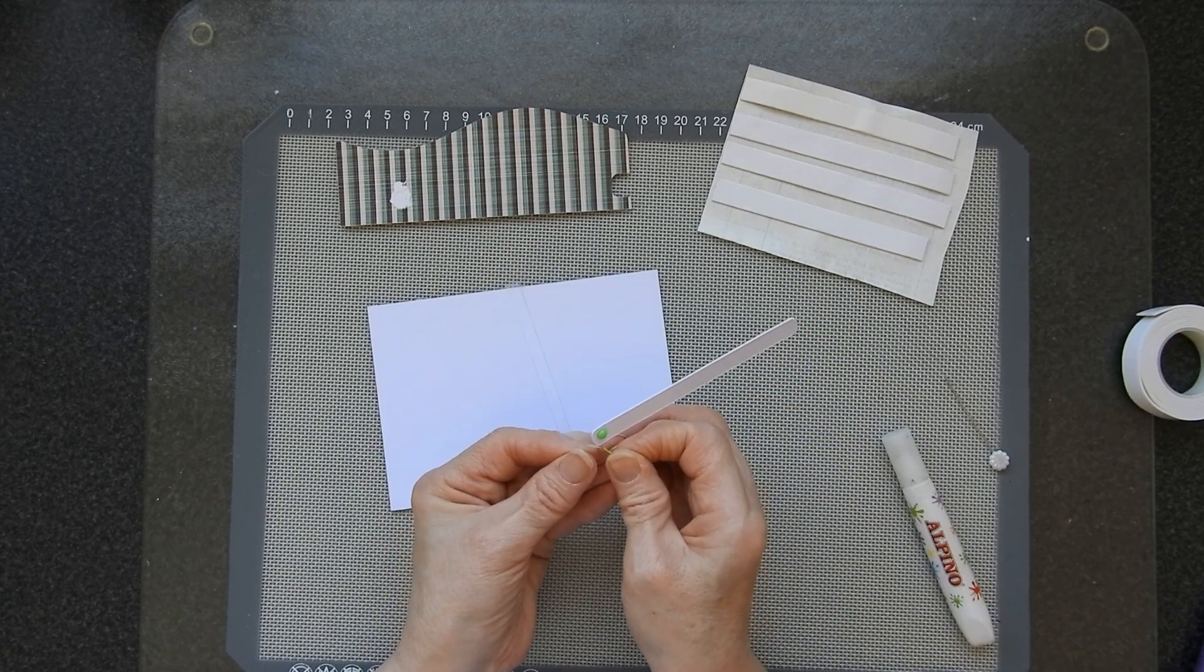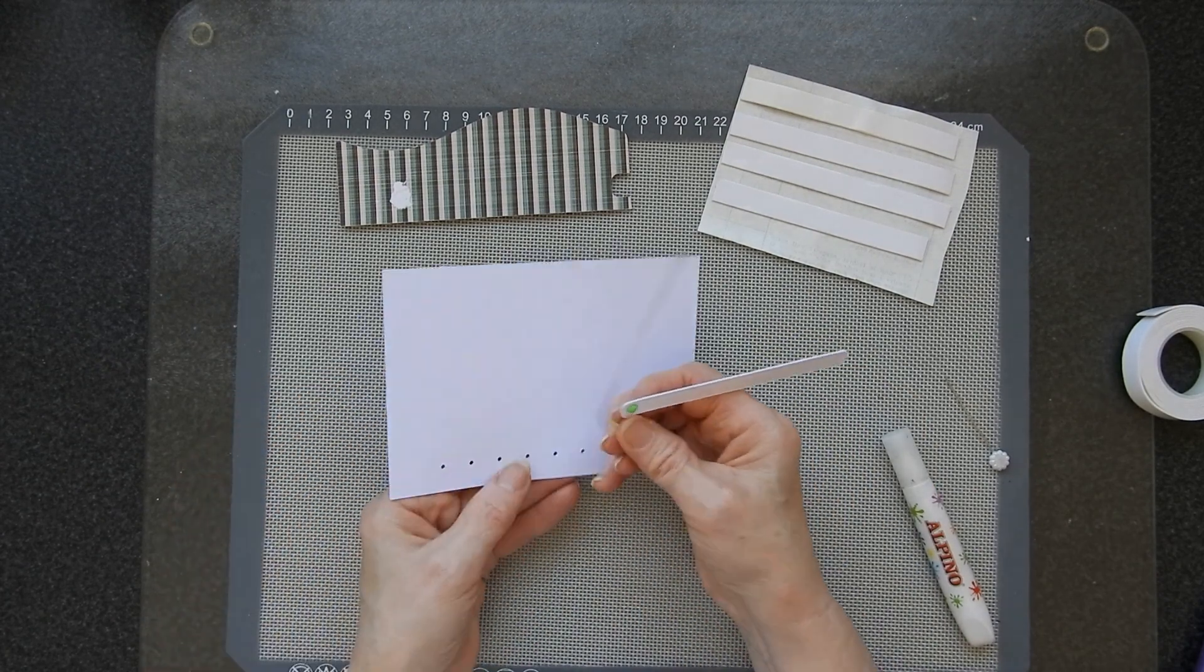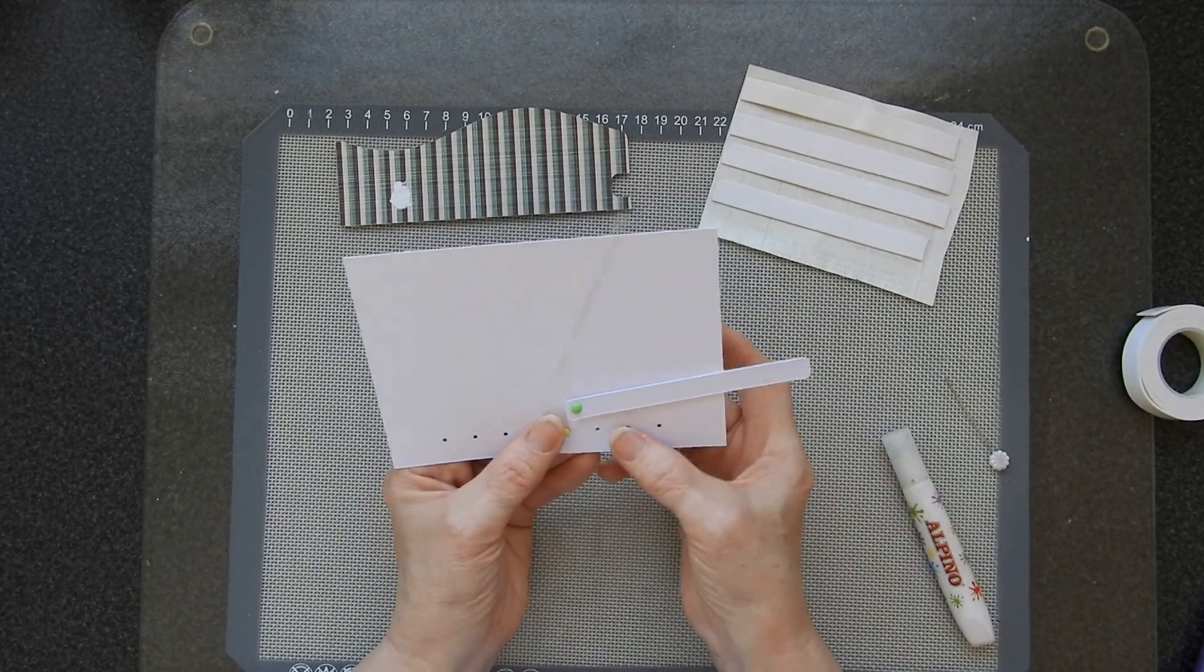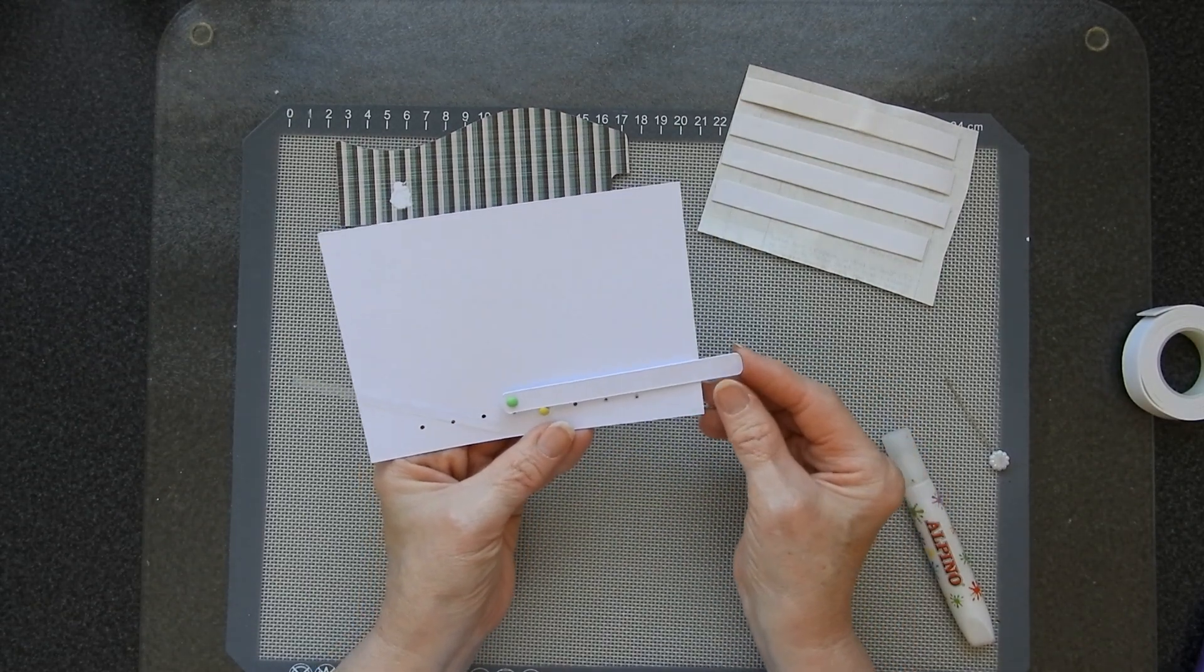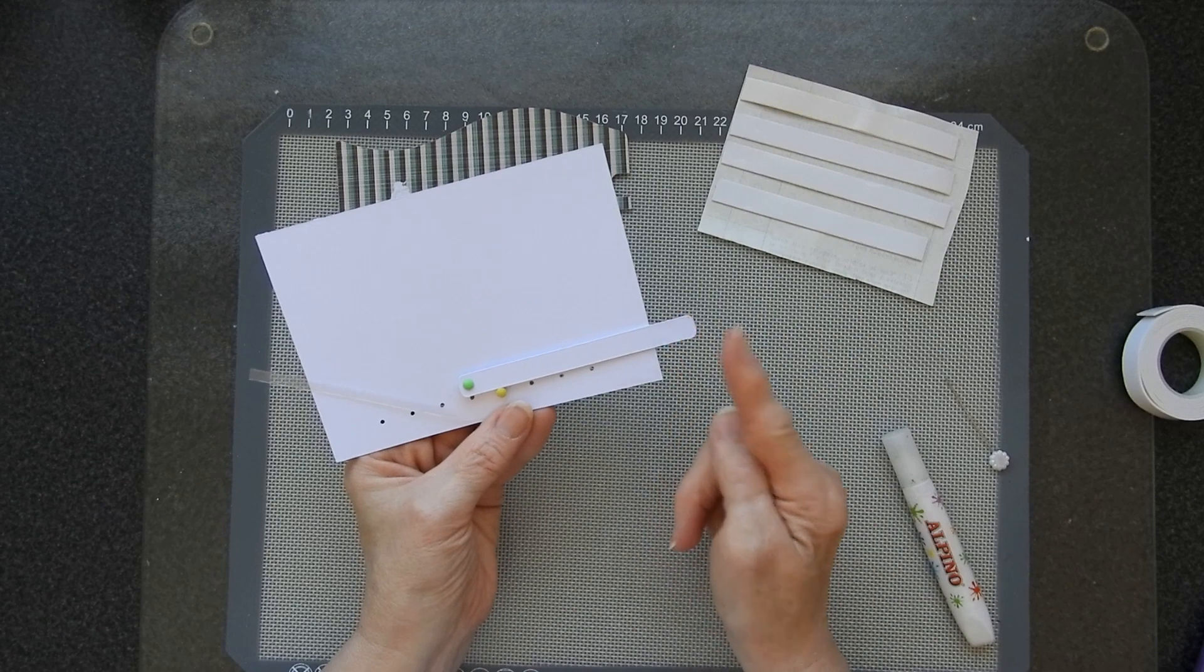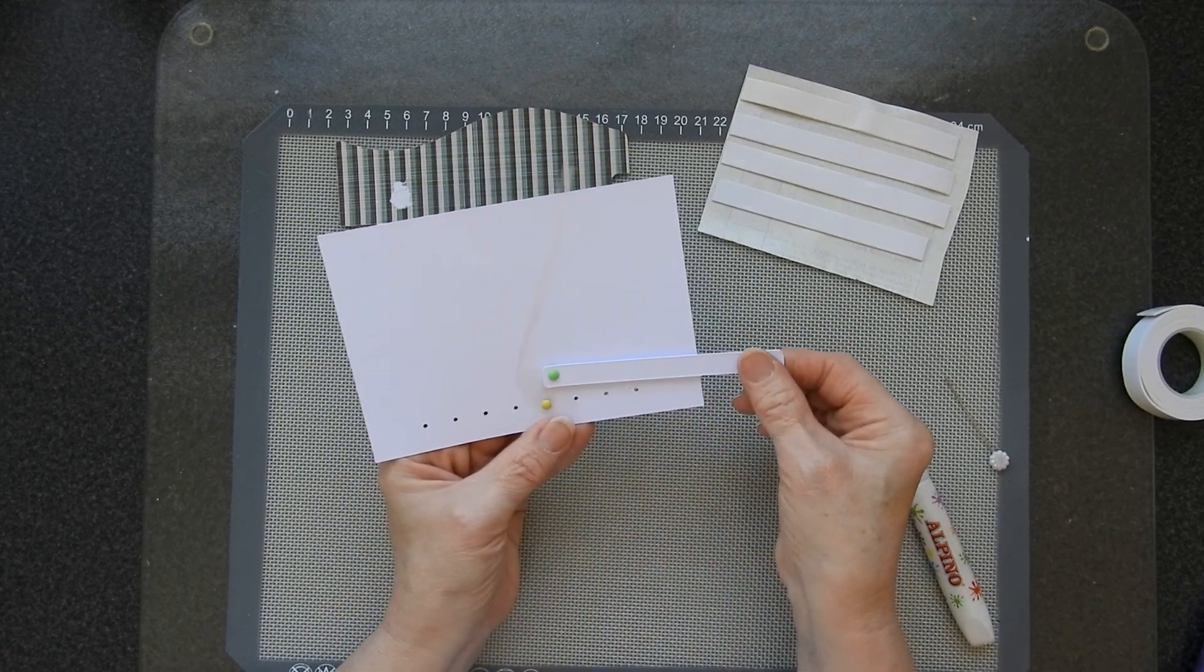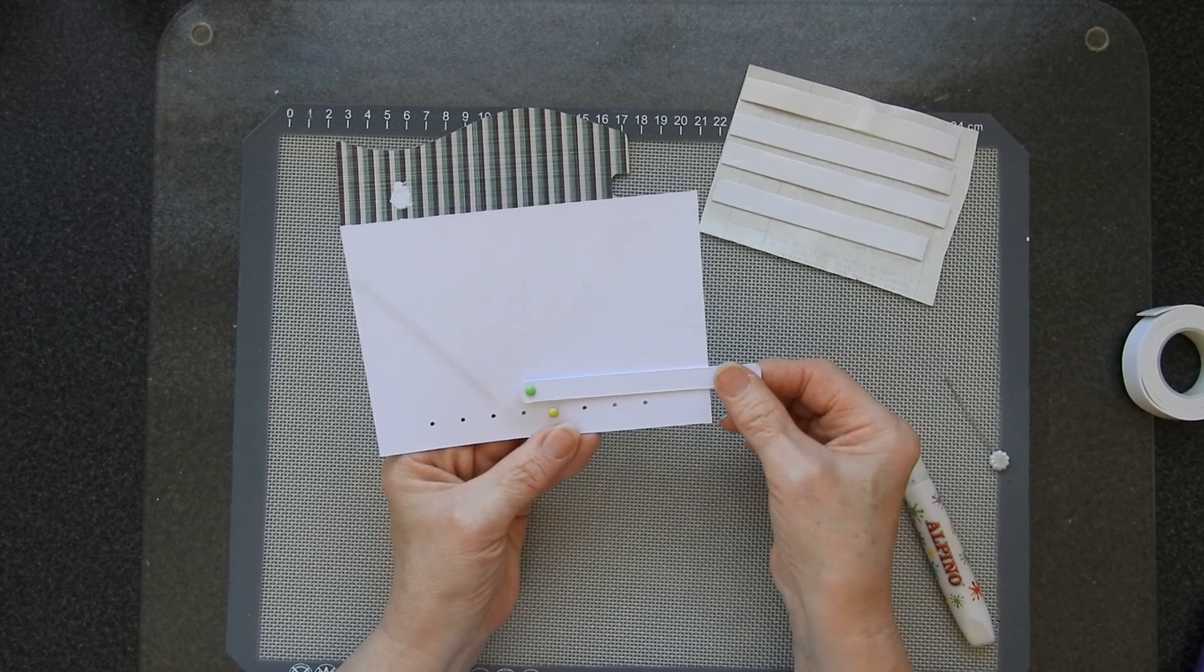So the other brad is going to go through the bottom hole and just to start off with for positioning, I'm just going to put it through hole number four. So when this is fully in and you can trim off the end of this, it's going to be to the left and it will pull to the right. That's what I need it to do.